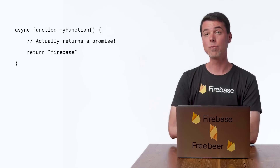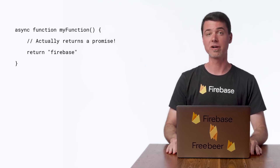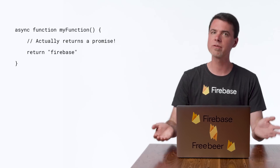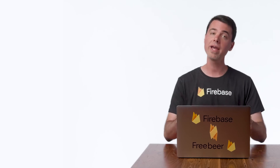So with the async keyword added before a function, you can indicate that the function always returns a promise, no matter what it returns inside the function. And the other thing the async keyword does for a function is let you use the await keyword inside that function. With await, you can temporarily pause the execution of an async function until some other promise is fulfilled or rejected, then get a hold of its result. Let's take a look at that.